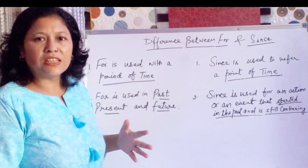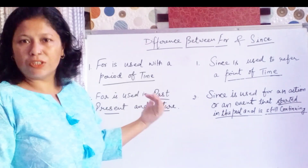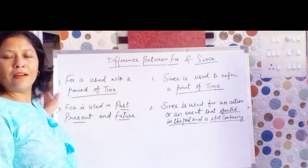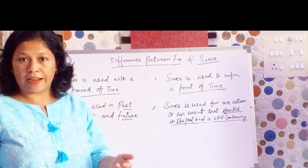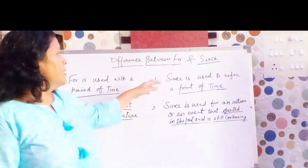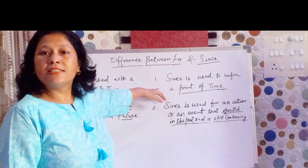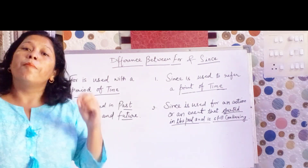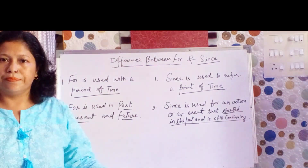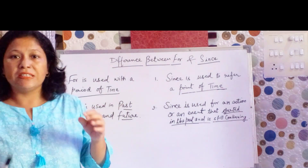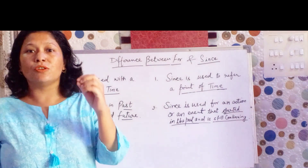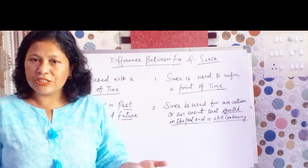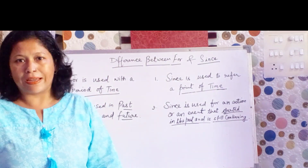'For' is used with a period of time. Whereas 'since' is used to refer to a point of time. Point of time means a particular point when any event or an action took place.